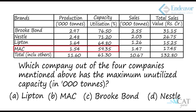For Mac, production is 1.54 at 59.35% utilization. Approximating 1.5 as 60%, total capacity is about 2.5, but because utilization is even lower, the actual capacity is higher, giving an unutilized portion slightly greater than 1. After close comparison, Mac has a marginally higher unutilized capacity than Nestle, making Mac the correct answer.